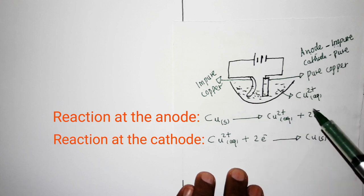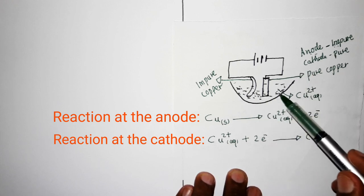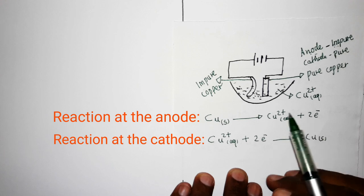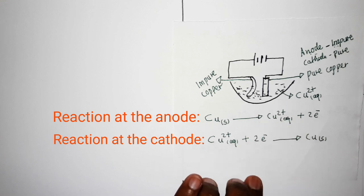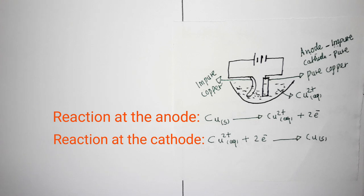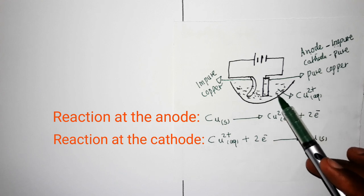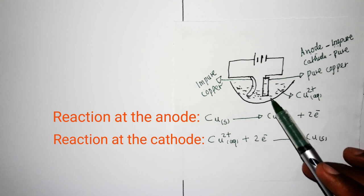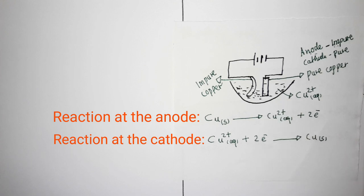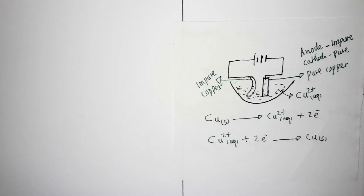After the electrolysis process, a sediment is formed at the bottom. Note that after purification, there will be traces of gold and silver collected as sludge at the bottom of the electrolytic cell. That sludge is the sediment containing traces of gold and silver. This completes the purification of copper.